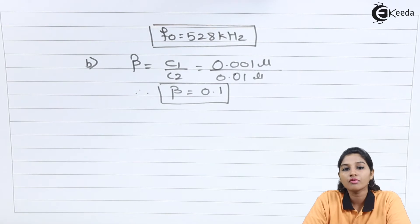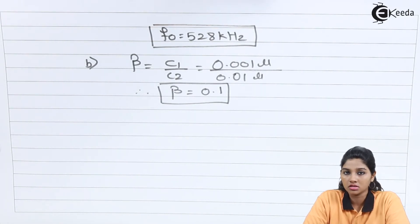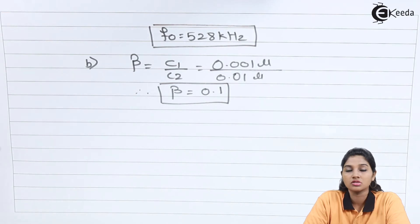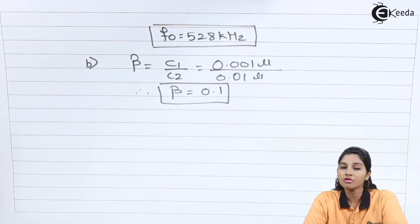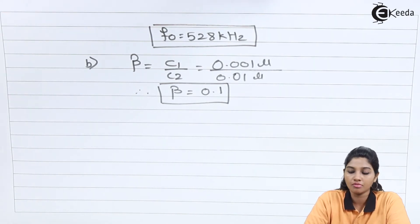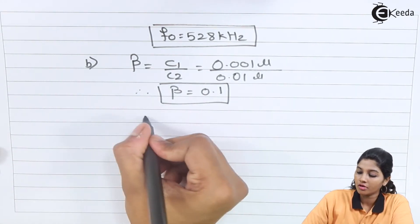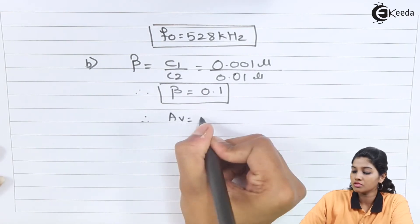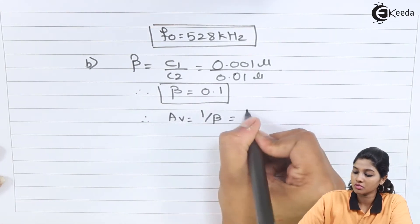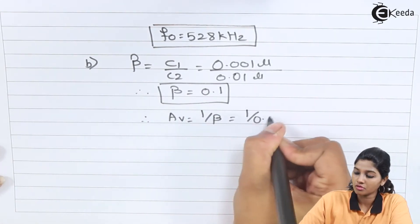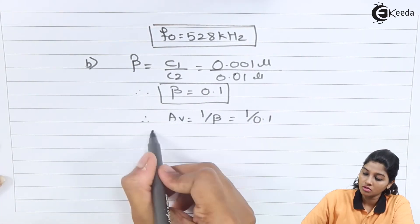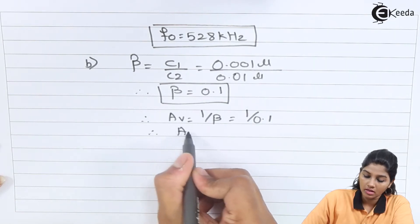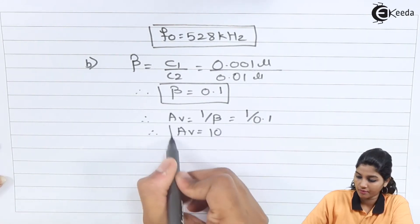Find minimum gain Av that must be satisfied by the circuit to produce oscillations. Using the formula Av = 1/beta = 1/0.1 = 10. So the minimum voltage gain is 10.